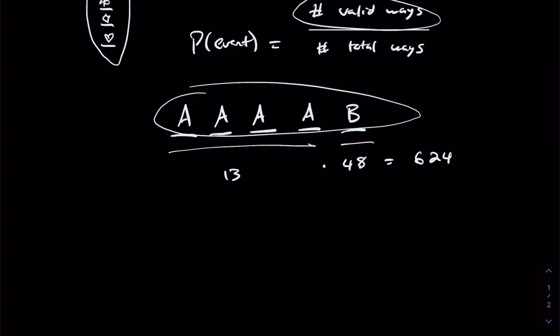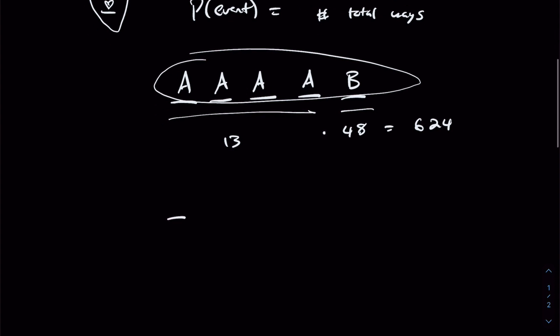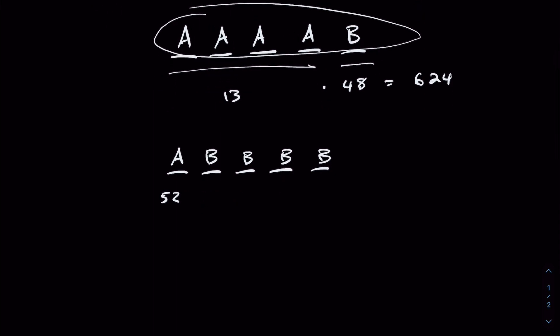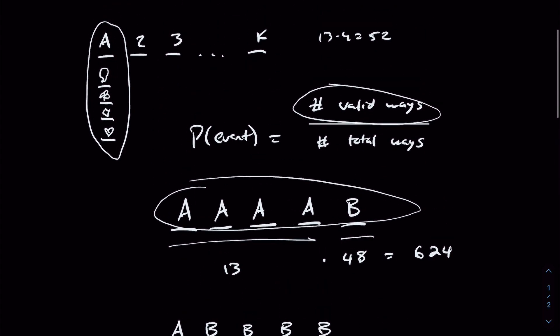To prove that this methodology works, we can approach it similarly but fix our first rank to be the single card and our second rank to be the quad. This is the exact same hand — still a four of a kind. Now for the single, there are 52 possible cards to choose from. And for the quad, having removed that single, only 12 valid ranks remain, giving 12 possible options for the last four cards. Multiplying through gives the exact same answer of 624, proving that this methodology is sound.